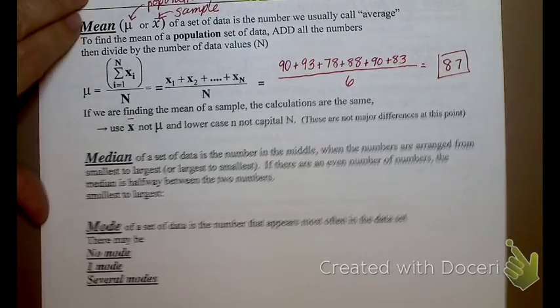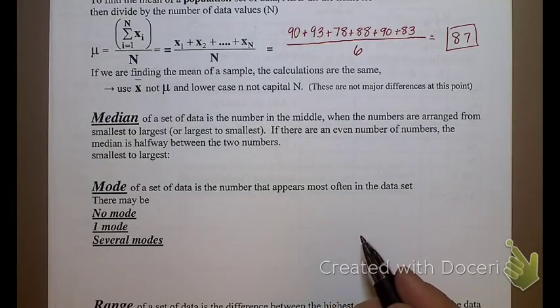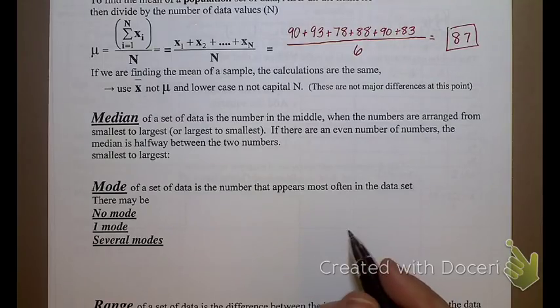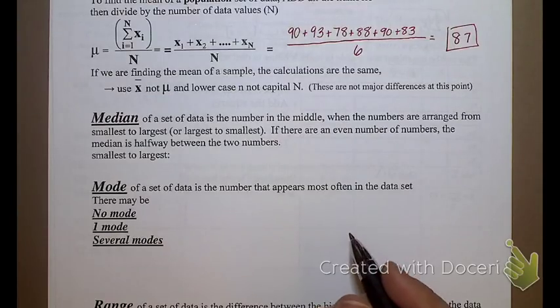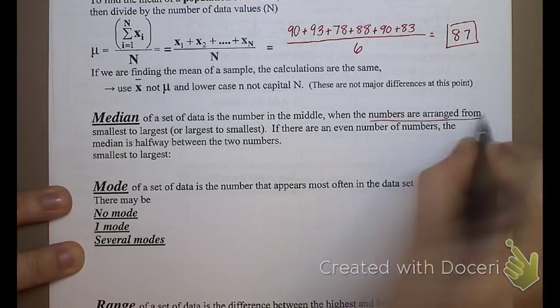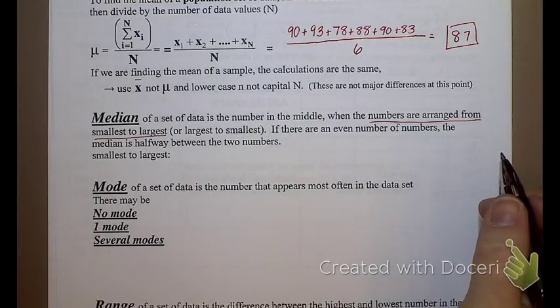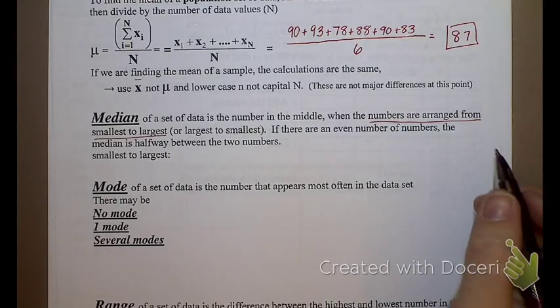Median. What's the median again? Whatever's in the middle, right? Now there's a trick, because I could write my data down in one order, and she could write her data down in a different order, and we would have different ones in the middle, right? So how do we make sure that I have the same median as her? You have to first write the numbers, typically from smallest to largest. I guess you could do largest to smallest, but who goes there?